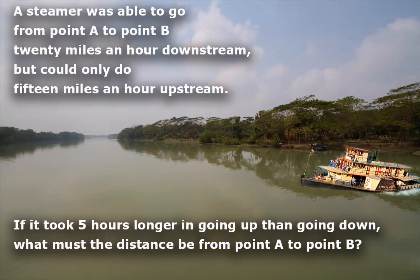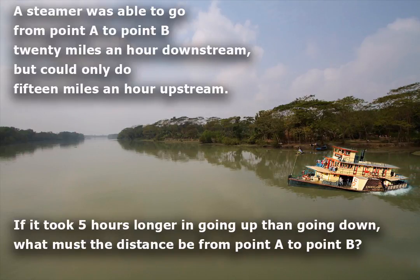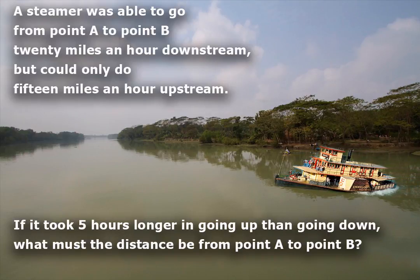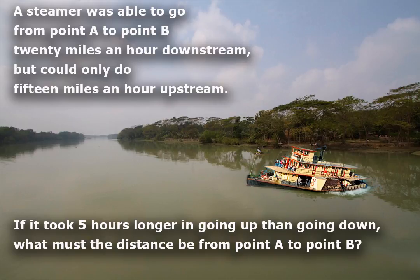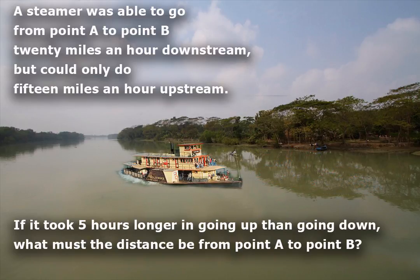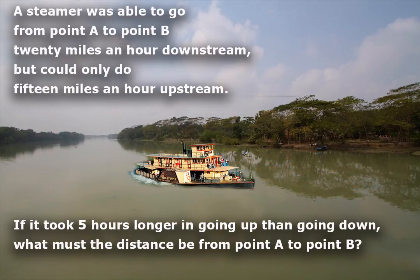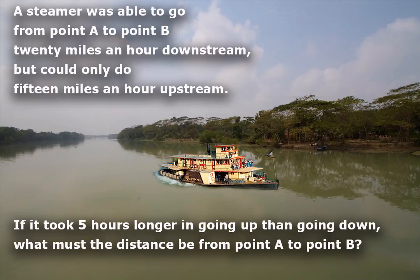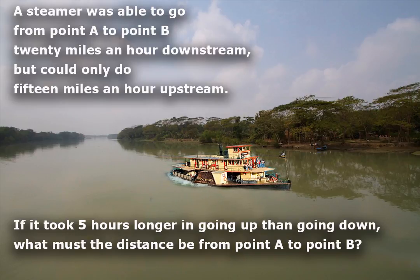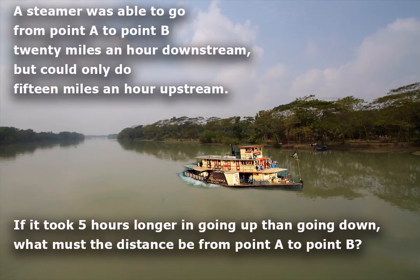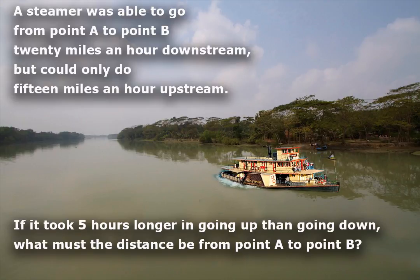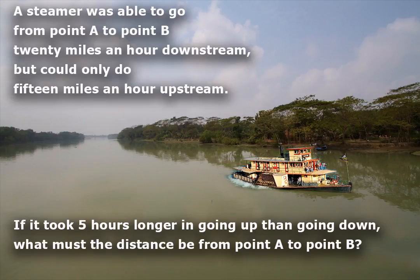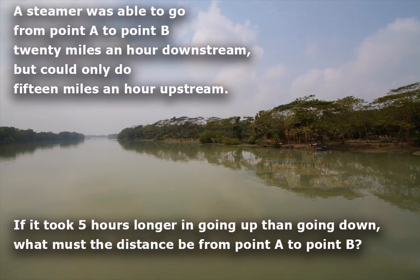A steamer was able to go from point A to point B, 20 miles an hour downstream, but could only do 15 miles an hour upstream. If it took 5 hours longer in going up than going down, what must the distance be from point A to point B?